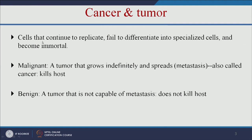Let us see what is the difference between cancer and tumour. The cells that continue to replicate and fail to differentiate into specialized cells and become immortal — these are called cancer cells or tumour cells. The main difference between cancer and tumour is malignant cells. A tumour that grows indefinitely and spreads is called metastasis, and it is also called cancer cells, which kills the host.